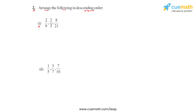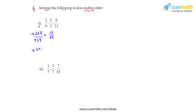That can be done by finding the LCM for the three denominators: 9, 3, and 21. The LCM for these three is 63. To make the first fraction's denominator 63, we multiply both the numerator and denominator by 7, giving us 14 over 63. For the second fraction, we multiply numerator and denominator by 21, giving us 42 over 63.